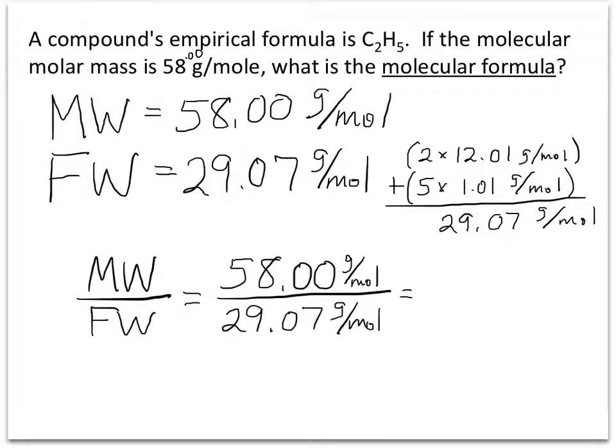If you get mixed up, it's the larger number over the smaller number. This should establish a whole number ratio. In this case, the answer is 2.